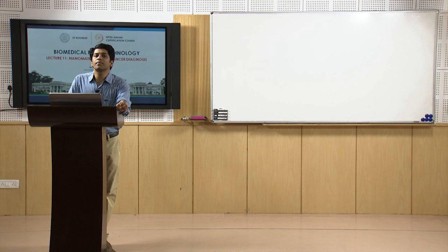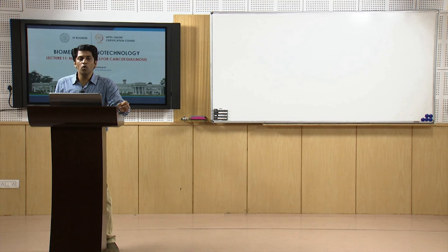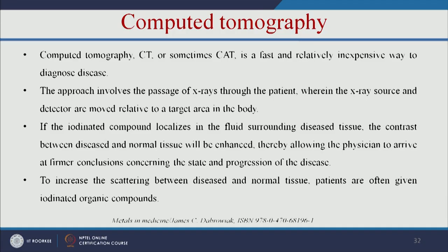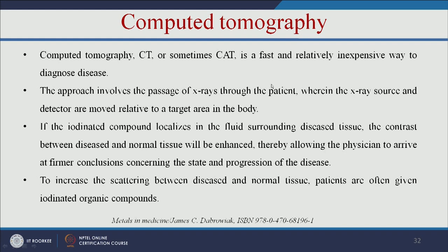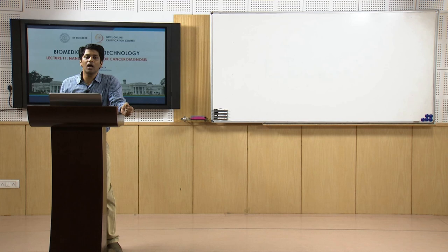Let us see the role of nanomaterials in traditional methods like CT scan or MRI scan. Computer tomography (CT or CAT scan) is a fast and relatively inexpensive way to diagnose disease. It involves passage of X-rays through the patient, with X-ray source and detector moved relative to a target area. If an iodinated compound localizes in the fluid surrounding diseased tissue, the contrast between diseased and normal tissue is enhanced, allowing the physician to assess the state and progression of the disease. Patients are often given iodinated organic compounds to increase scattering contrast.